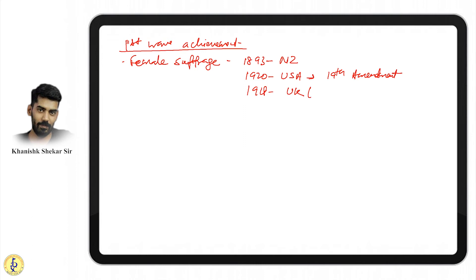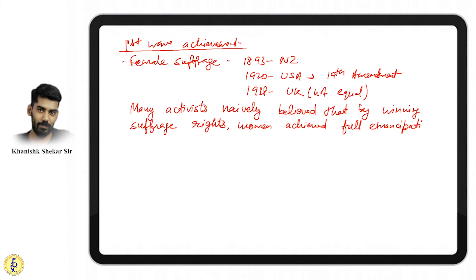But it was not equal—they were given voting rights but not equally to men. Some activists naively believed full emancipation was guaranteed, but they were wrong. In UK it was qualified—not every woman could vote like all men could. It was conditional. They realized more needed to be done, leading to the second wave.